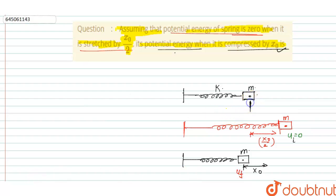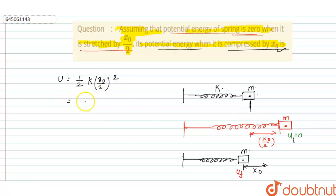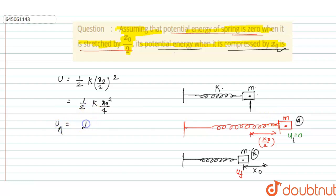This is the mean position. The potential energy when it is stretched by x₀/2 is equal to u = (1/2) · k · x², where x = x₀/2. So this becomes (1/2) · k · (x₀/2)² = (1/2) · k · x₀²/4. Let us consider this is position A and this is position B. At position A, the potential energy equals (1/8) · k · x₀².